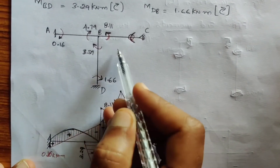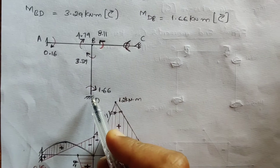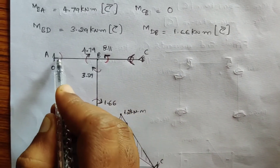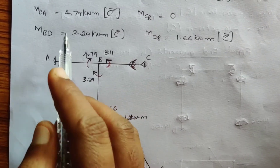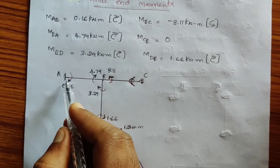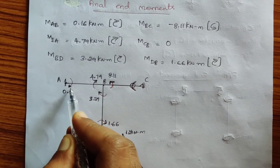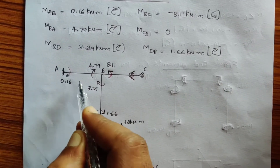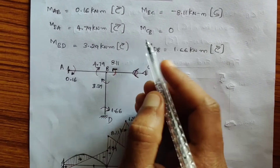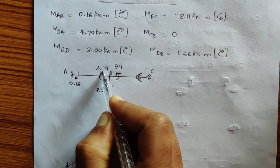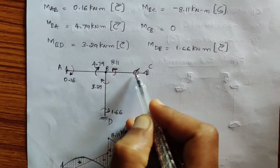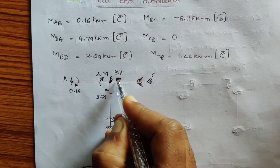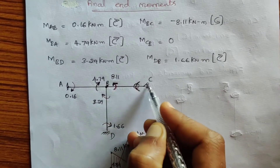Now we will start drawing the final end moment diagram. First, draw the frame with supports and mark inverted arcs on all spans. For span AB, we have two moments to write. MAB = 0.16 kN·m is clockwise, so the arrow mark at A should be drawn to give a clockwise moment about A. For MBA on the B side of span AB, the nature is anti-clockwise, so the arc is marked anti-clockwise about B. For MBC = −8.11 kN·m, which is anti-clockwise, the arc about B is marked anti-clockwise. The CB value is 0, so I have written 0 there.